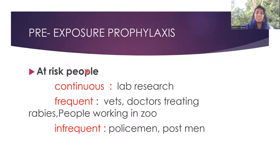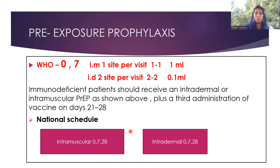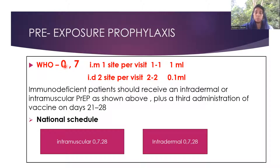Pre-exposure prophylaxis is given to at-risk people. The WHO expert committee guidelines describe exposure as continuous, frequent, and infrequent. Continuous means those having continuous exposure — mostly lab researchers. Frequent means exposure is possible, such as veterinary doctors, doctors treating rabies cases, and people working in zoos. Infrequent exposure applies to people like policemen and postmen. There are two differences between the WHO schedule and the national schedule: WHO recommends a two-dose schedule at day zero and day seven, whereas the national schedule follows zero, seven, and twenty-eight.